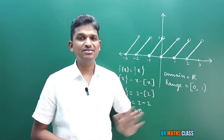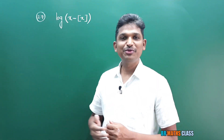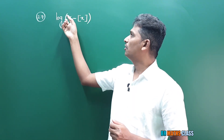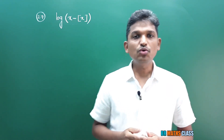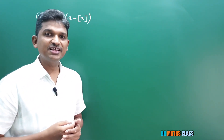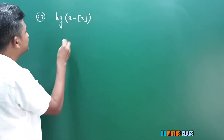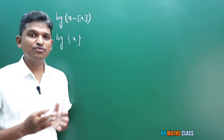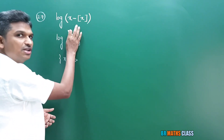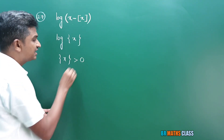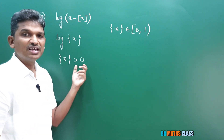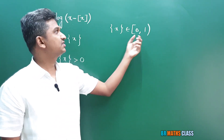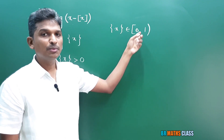Observe question number 27. We need to find the domain of log(x − ⌊x⌋). Just now we learned that fractional part of x is nothing but x minus ⌊x⌋, so this becomes log({x}). We know that logarithm is defined for positive real numbers only. So whatever the fractional part of x is, that must be greater than 0. We know that fractional part of x always lies in between 0 and 1, but there is a chance it will be 0.